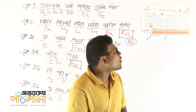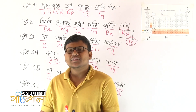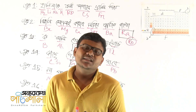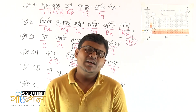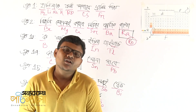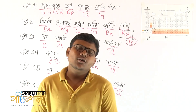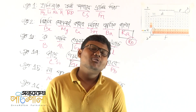Group 18 is the noble gases — also called the inert gases. The noble gases are: helium, neon, argon, krypton, xenon, and radon.